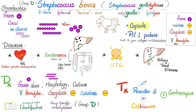Diseases caused by Streptococcus bovis include culture-positive endocarditis — inflammation of the endocardium of the heart — and bacteremia associated with GI malignancy, including colon cancer, inflammatory bowel disease, and liver disease. It can also lead to UTIs and biliary tract disease. Everything GI.